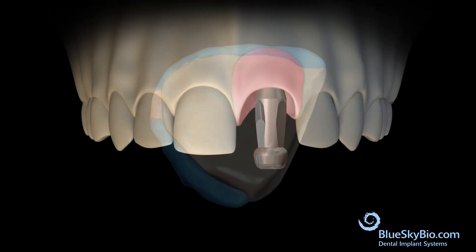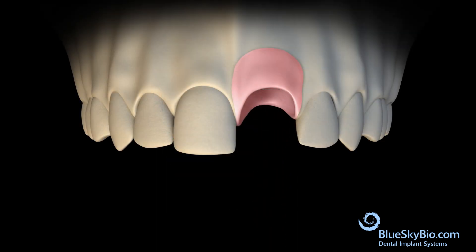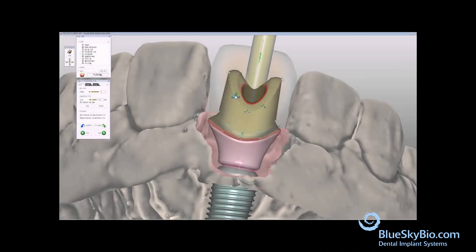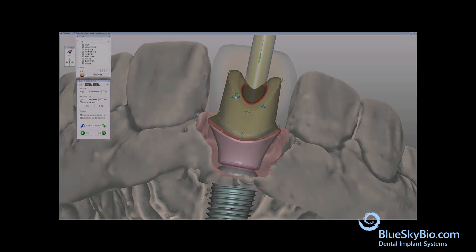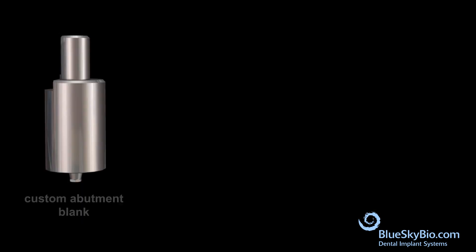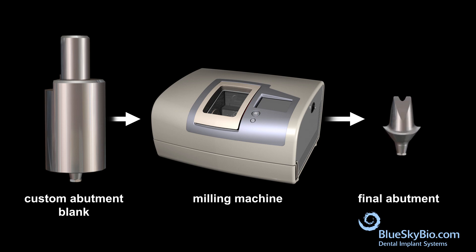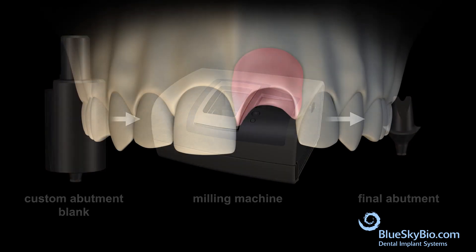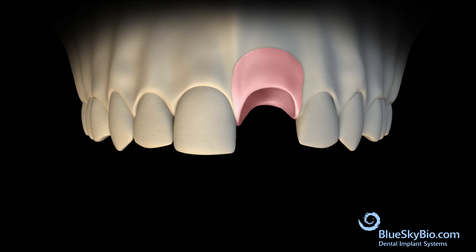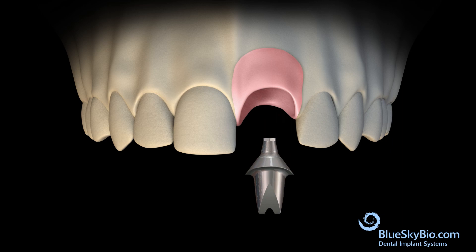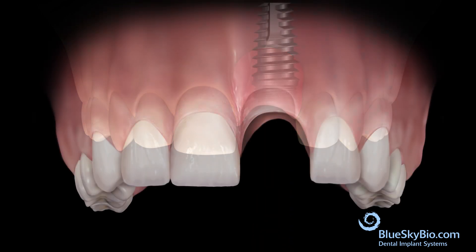Remove the impression transfer from the stone model. Design the abutment in a CAD software. Use a custom abutment blank to mill the final abutment. Place the abutment into the stone model to verify the fit. Remove the abutment and place in the mouth.